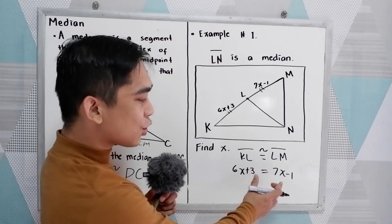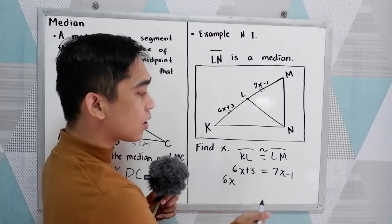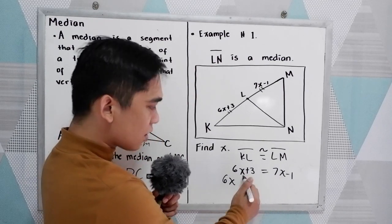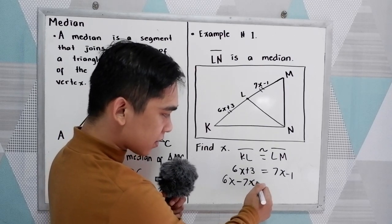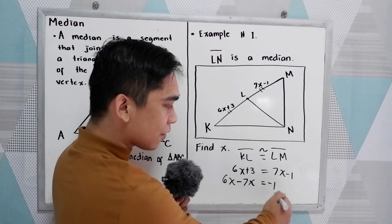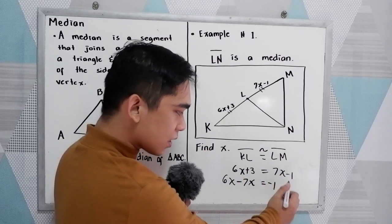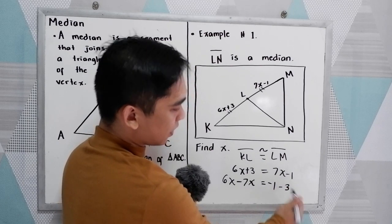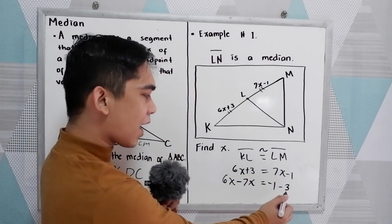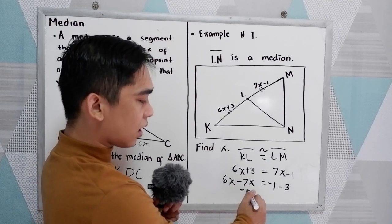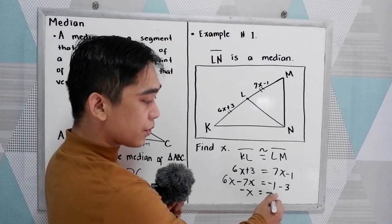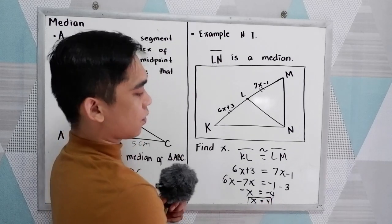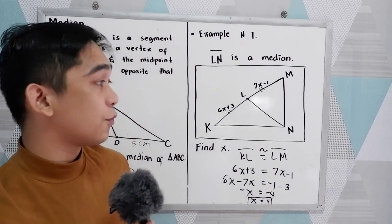Addition property of equality, or well-known as transpose. So positive 7x move on the left side, that will become negative 7x, is equal to negative 1. Subtract, add negative 3, or simply move to the right and change the sign. Now we have negative X is equal to negative 4. X is equal to positive 4. So the value of X is positive 4.